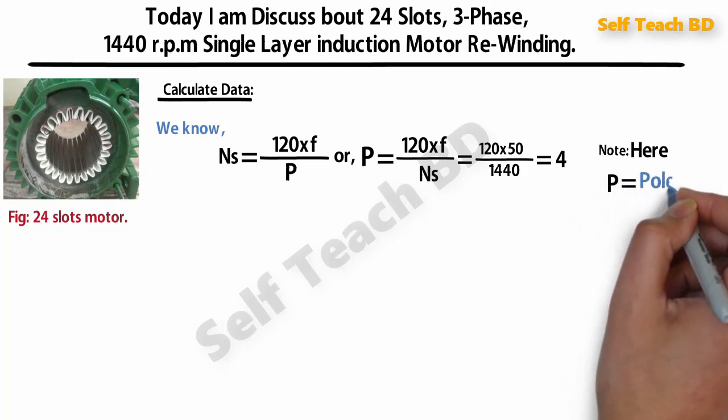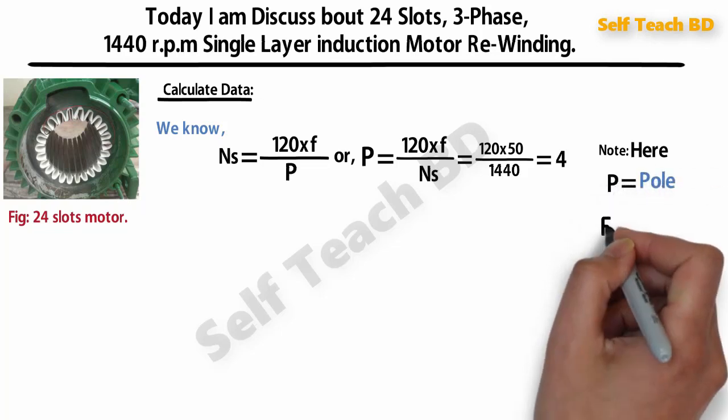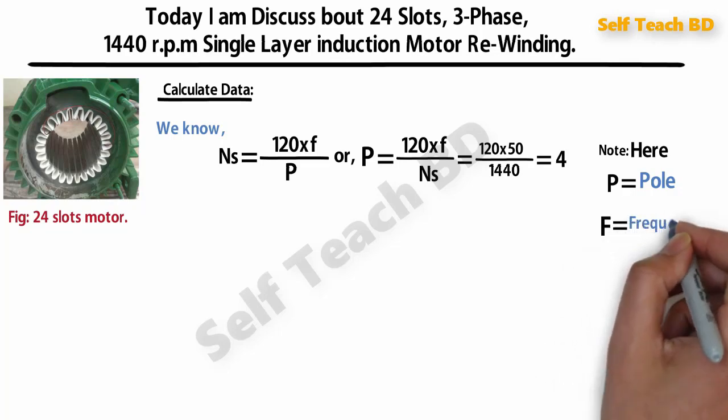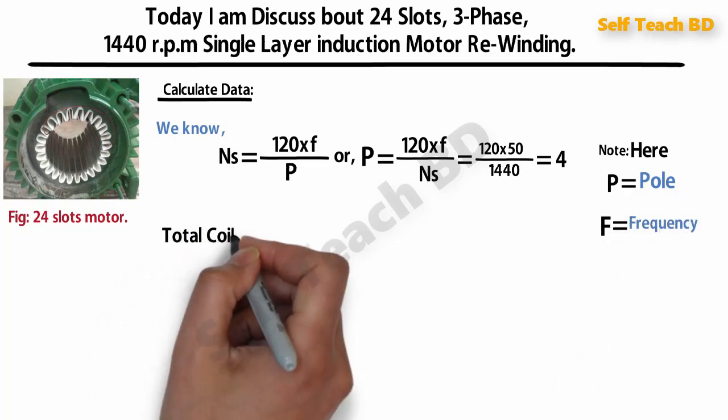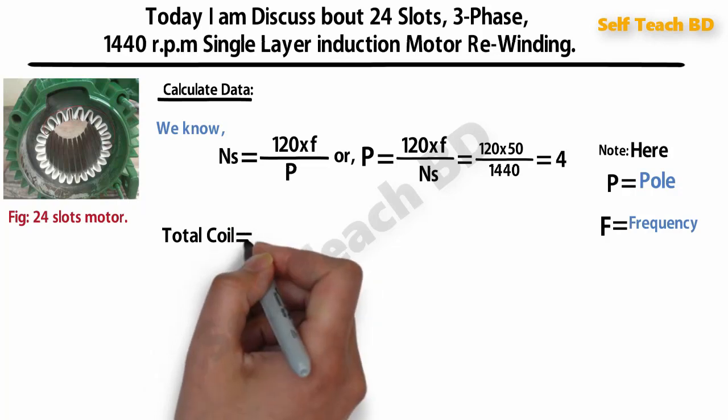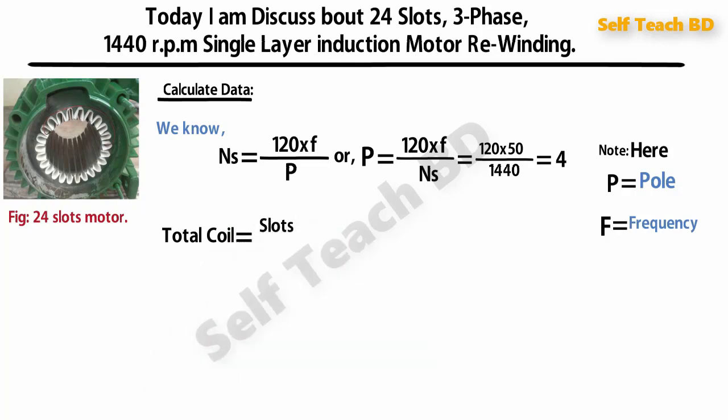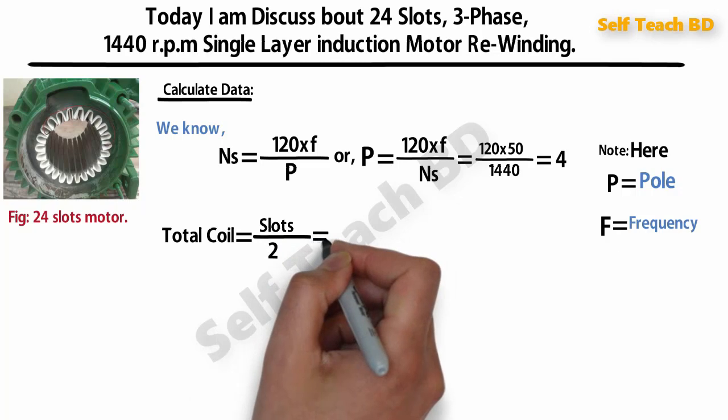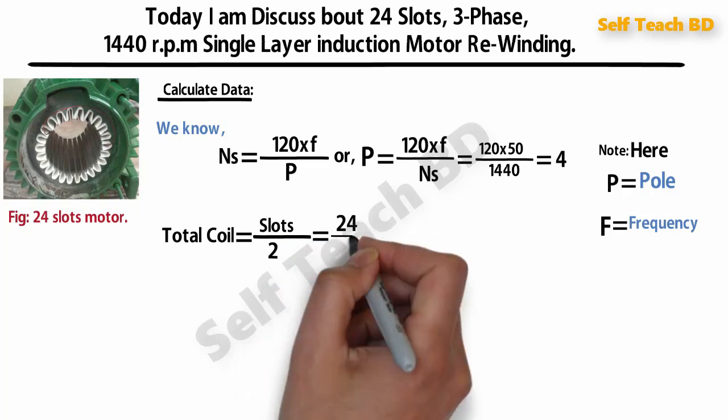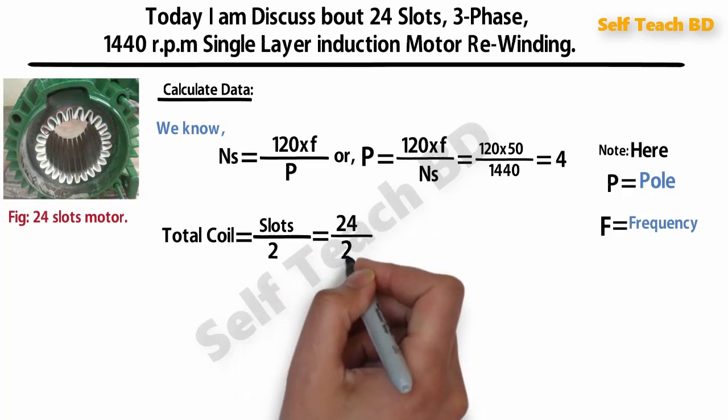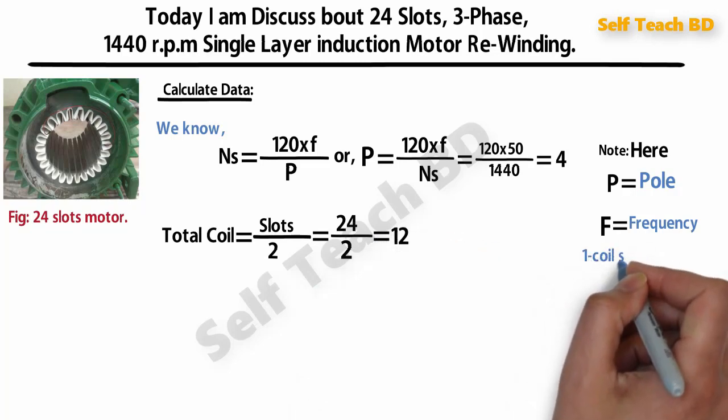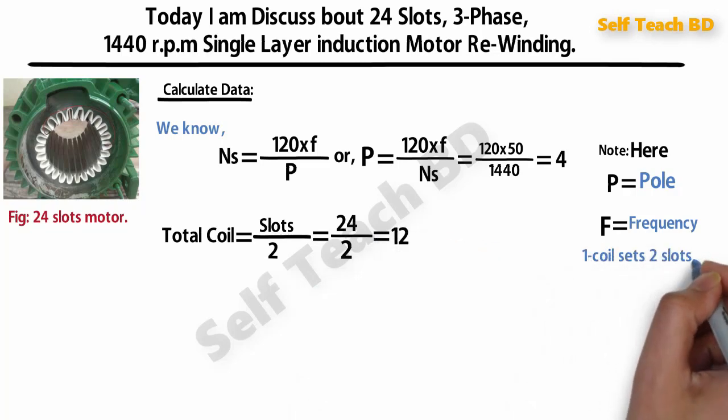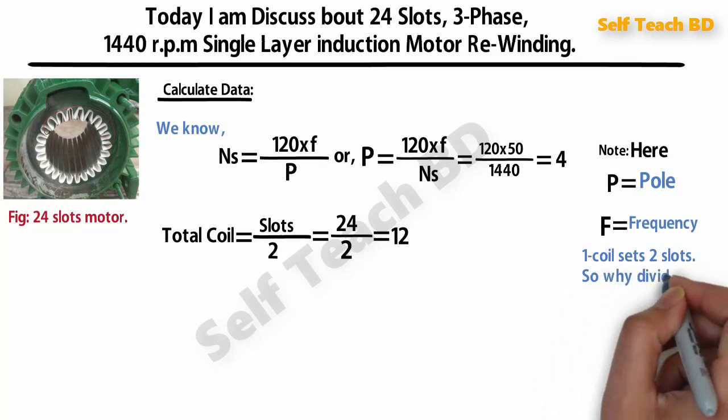Here our supply frequency is 50 and rpm is 1440, so we find pole. Note here P is pole, F is supply frequency. Total coil is equal to slot divided by 2. Our slot is 24, here we will find single layer, so we have to divide by 2, so our total coil is 12.